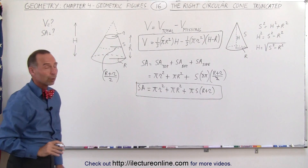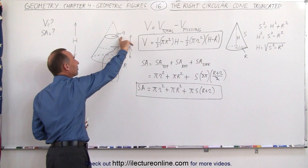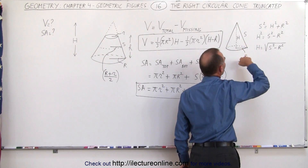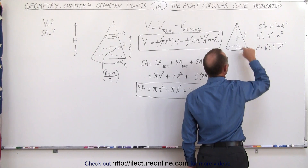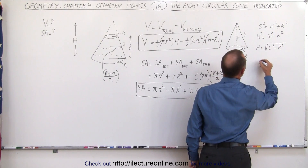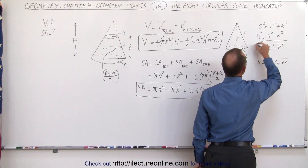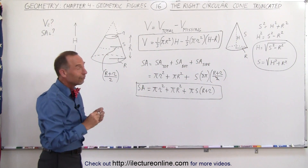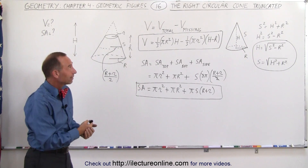On the right side of the board I've also shown how you can relate the height of the cone, the radius, and the length of the slanted side. Notice that if we think of this as a right triangle, s-squared equals h-squared plus r-squared. If you want to solve for h in terms of s and r it can be written that way, or if you want s you can say s equals the square root of h-squared plus r-squared. You may need this to calculate the height or slanted side if you're given the other and need it for the equations. Now you also know what to do with a truncated right circular cone.